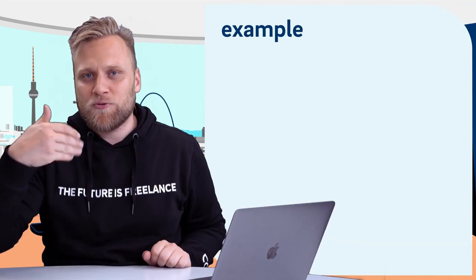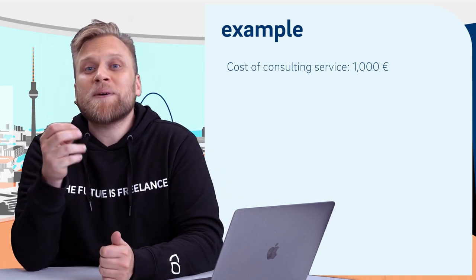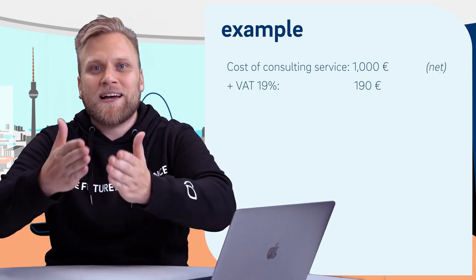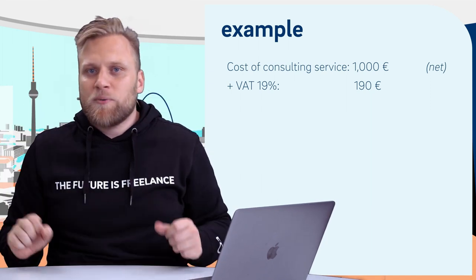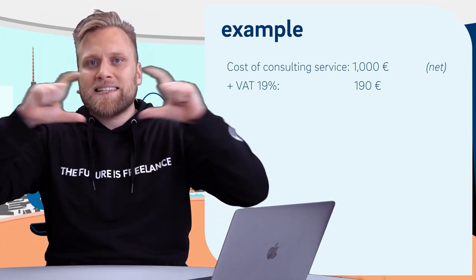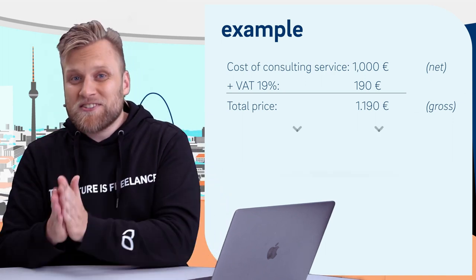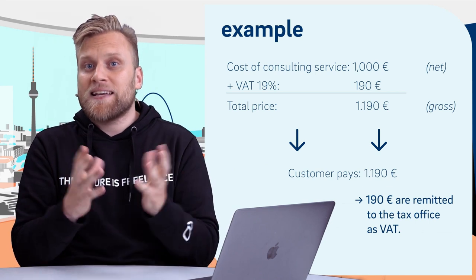The most common mistake in the context of value-added tax is confusing gross and net. Many people think they have to pay 19% on an invoice amount — but that's not quite right. If you provide a consulting service, you start with your net price — that's yours, the value of your work. Then you add 19% VAT on top. So if your net price is 1000 euros, you add 190 euros VAT, resulting in a gross amount of 1190 euros. You receive 1190 from the customer but then remit the 190 to the tax office.